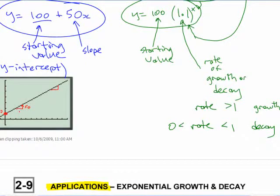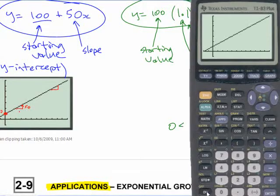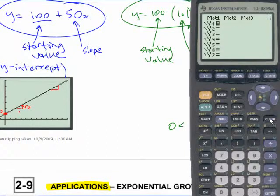Okay, look at this on the calculator. So we're going to change it from a linear function to an exponential function here. We're going to start with 100. We're going to multiply it by 1.1 to the power of x. I'm going to keep the same window that I had before.